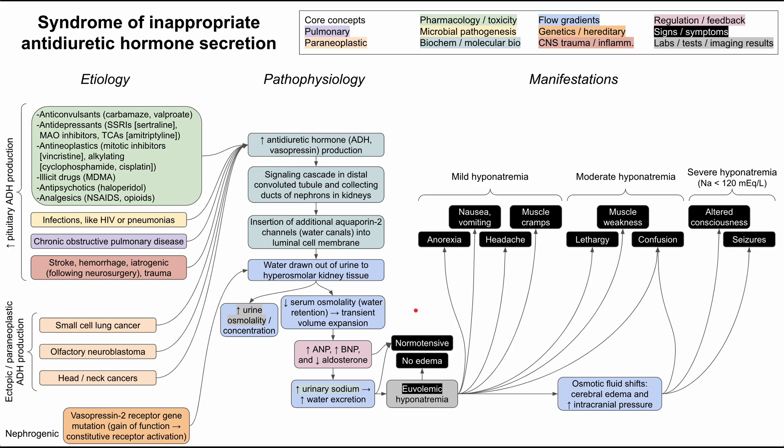This is a Mechanism of Disease Map for SIADH, or Syndrome of Inappropriate Antidiuretic Hormone Secretion. This is a disease involving the hormone ADH, which stands for anti-diuretic hormone — a hormone that removes some of the water from your urine. We'll be talking about what happens when you have too much ADH.